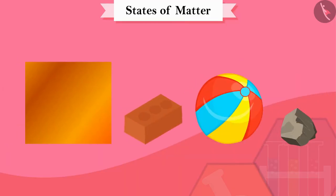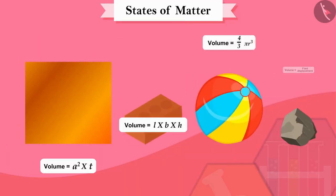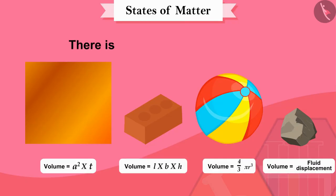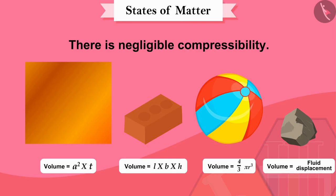Now if we look at their volume, we will find that the volumes of all these matter are constant — that is, there is negligible compressibility.